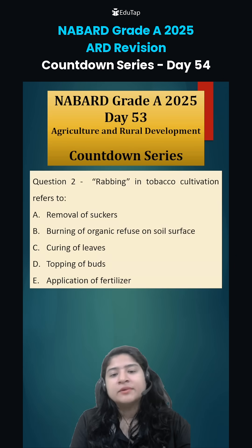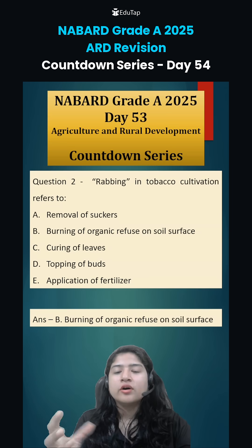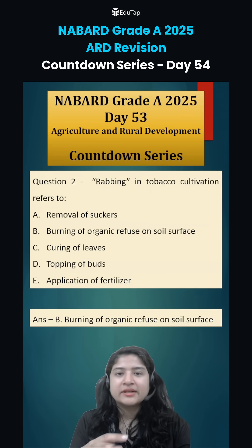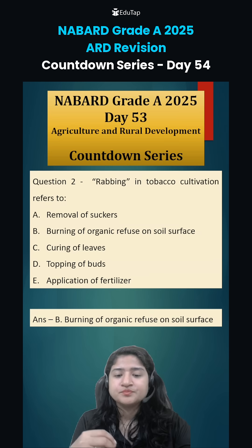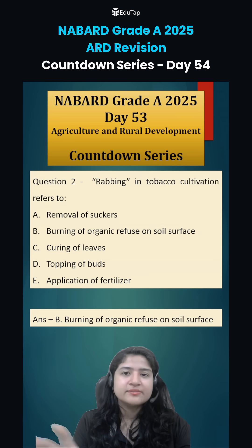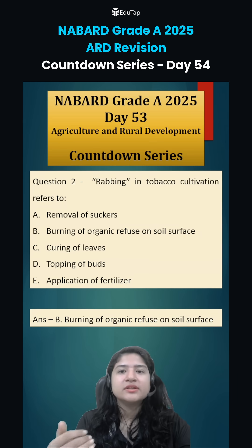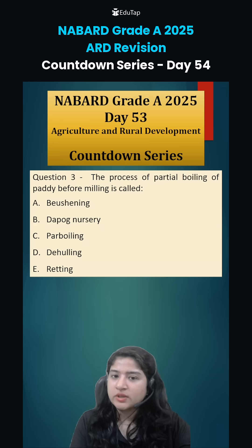Question number two: 'rabbing' in tobacco refers to the process where organic material present in the field — for example leaves and other organic matter — is burned on the soil surface and then mixed into it. This destroys weeds and unwanted material while also adding nutrients back into the soil.